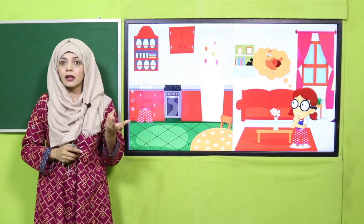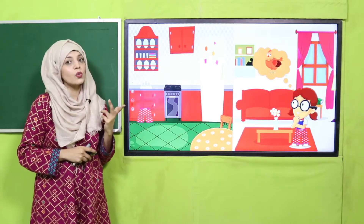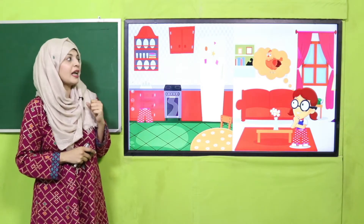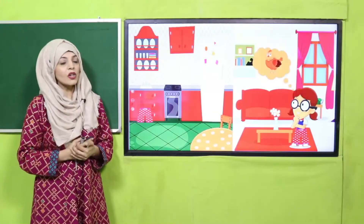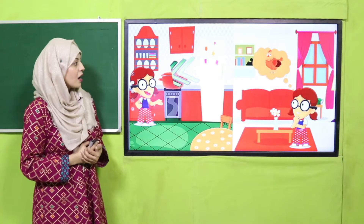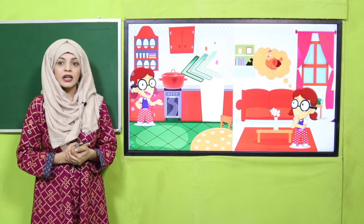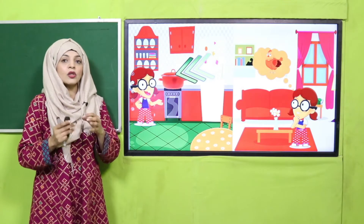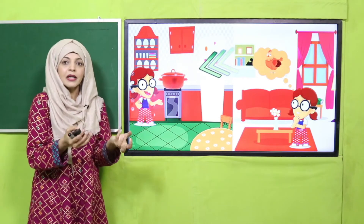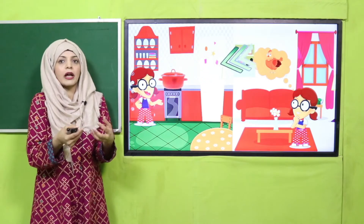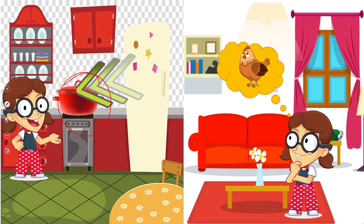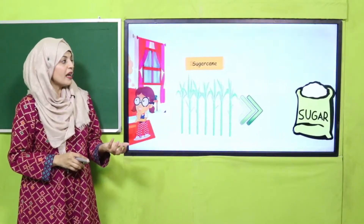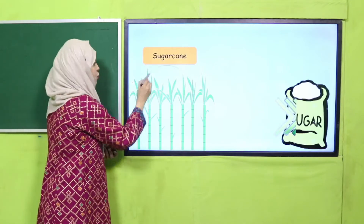Sara is standing in her living room and she wants to eat chicken. Can she eat chicken directly like that? No. What she needs to do is cook it in the kitchen inside a pot. When Sara cooks it, the natural ingredient — chicken — is changed into a man-made food: it may change into curry, biryani, or anything she wants. So any man-made thing we make basically comes from natural things.